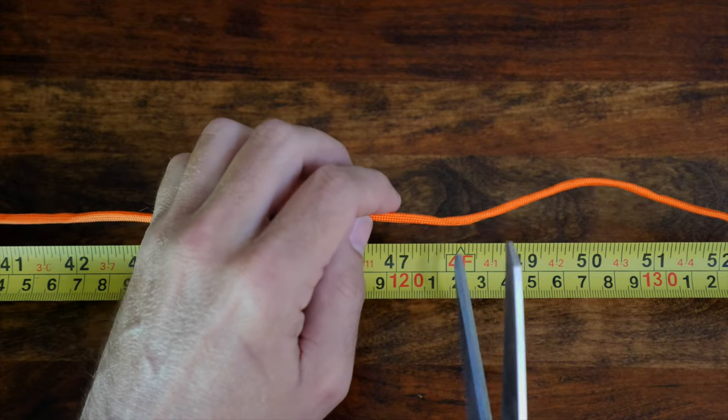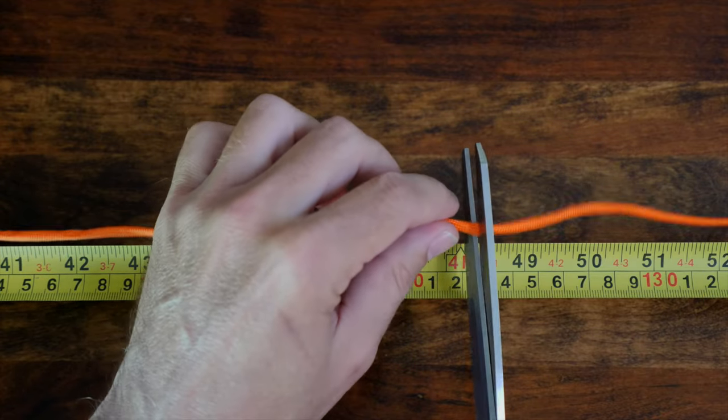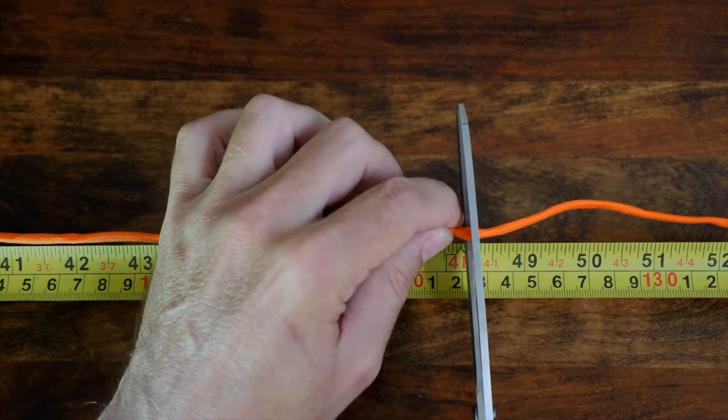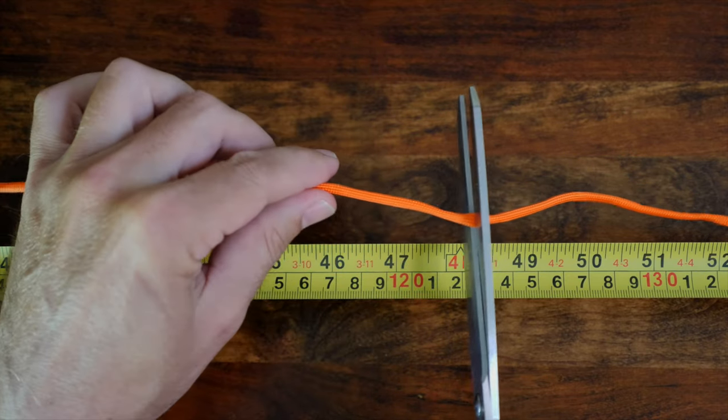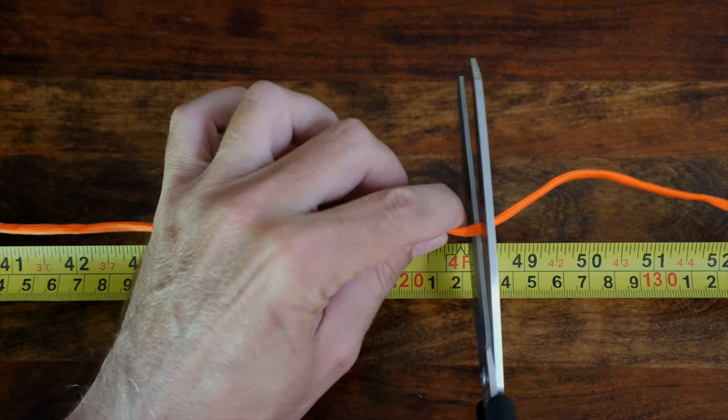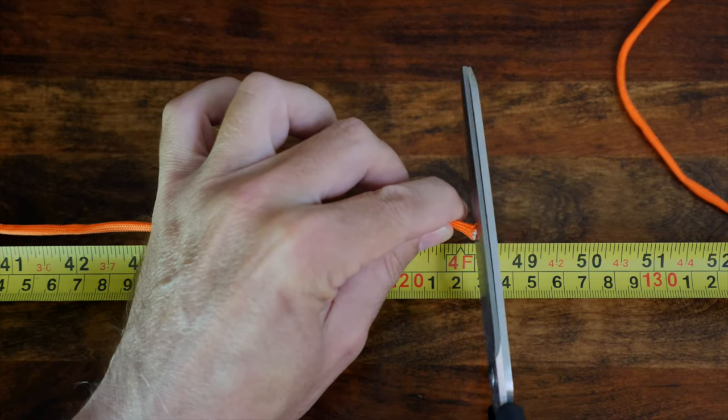For this style of paracord bracelet, I found that approximately eight feet of cord works well, but you may need more if you have a wider wrist. Because we're going to use two colors, begin by cutting each piece of paracord to roughly four feet in length. That's about 125 centimeters for those of you using metric.